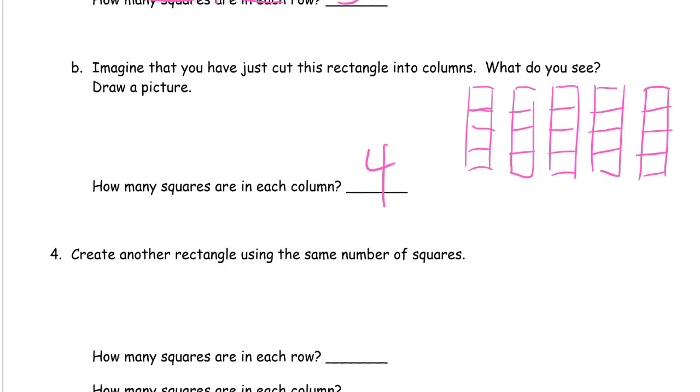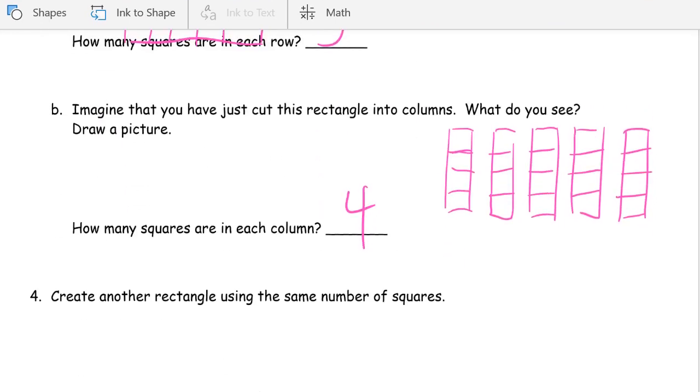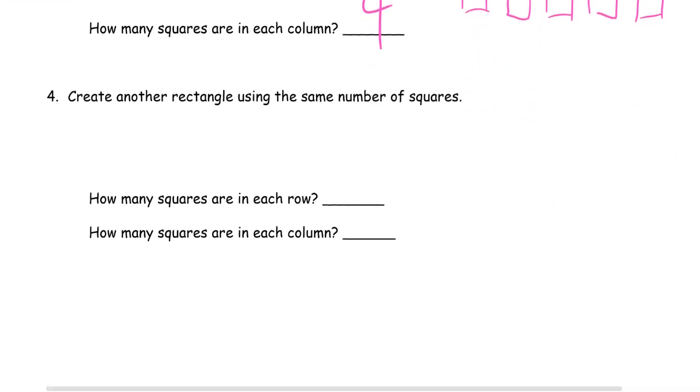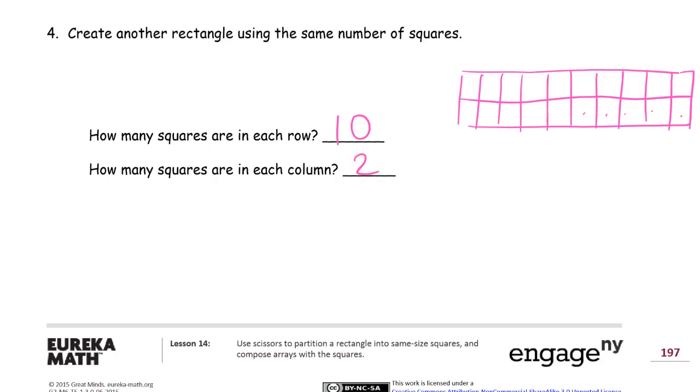Create another rectangle using the same number of squares. There are 20 of them. So, draw a picture of it. There's other ways to do 20. But I'm going to make 2 rows of 10. 1, 2, 3, 4, 5, 6, 7, 8, 9, 10. Good. So, there's my 20. How many squares are in each row? There are 10 in each row. How many are in each column? There's 2 in each column. There's a column, right? 2 in each column.